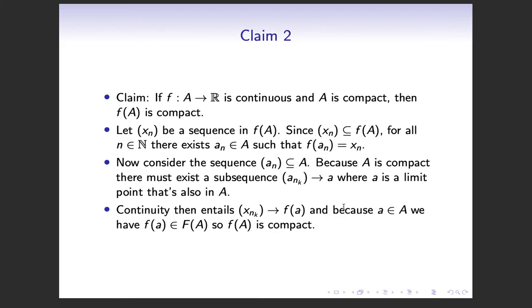And because a is in the compact set A, f(a) is in this set f of big A. So that means that for every sequence, we found just an arbitrary sequence in f(A) that has a convergent subsequence x_n_k that converges to a point that is in the set, which just means that it's compact. That's the definition of compactness.